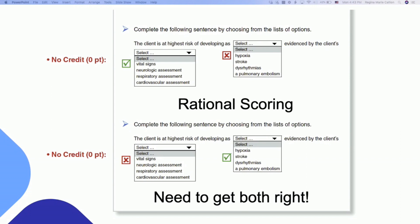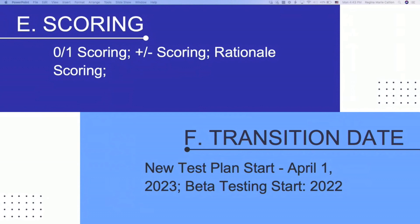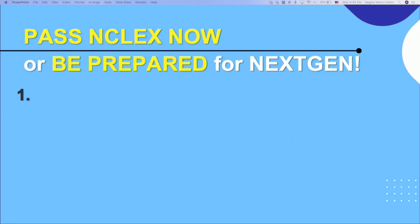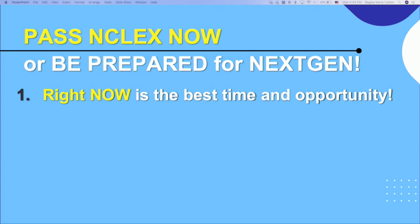These are the scoring options you will have to know about, and this is happening very quickly — 2023 is already upon us. The zero-one scoring, the plus-minus, and the rationale scoring: you need to know the question sets attached to them and how students are going to be scored. I'm very excited because this will require everyone to increase their familiarity with the test plan and the curriculum. I'm encouraging you to pass now or be prepared for the next generation NCLEX. Right now is the best time to take the current offering of the NCLEX exam.